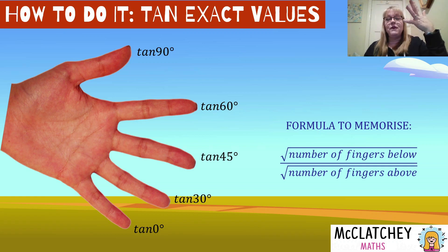So tan of zero, let's start again in the same one here. This time I have no fingers below. That means it's zero over the square root of four fingers above. So the square root of zero over the square root of four. We know that's just going to be zero. So tan of zero is zero.